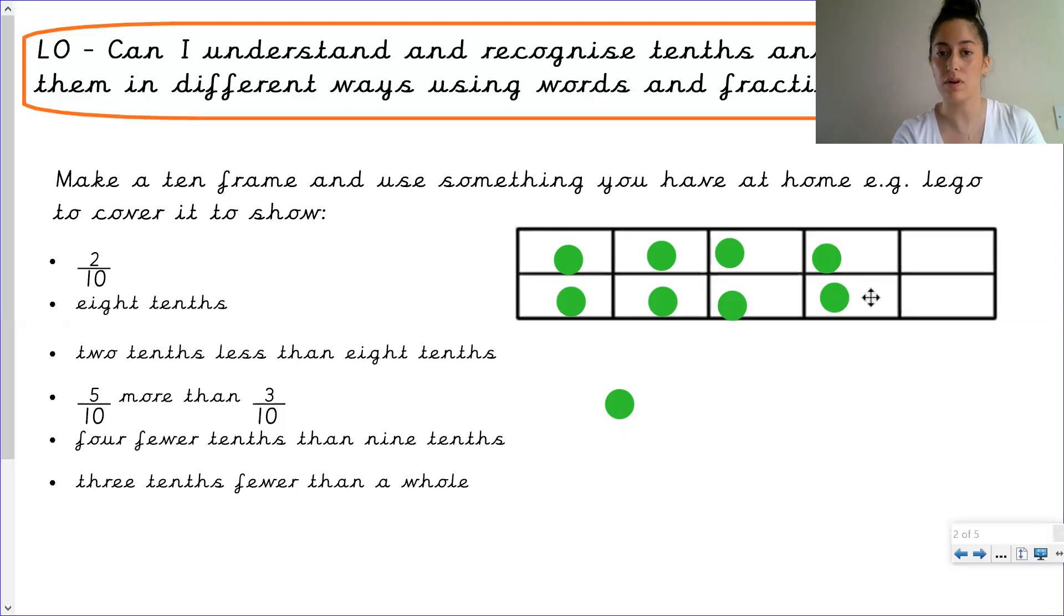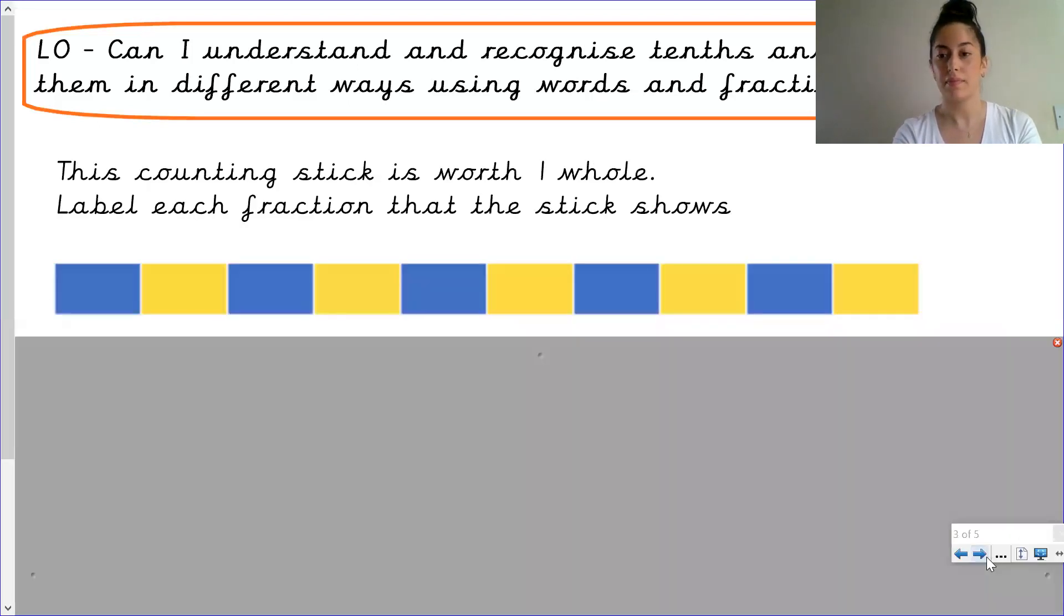Now I've added my five tenths. Now we need to see how much we've got. Two, four, six, eight. We've ended up with eight tenths. Have a go now that I've shown you we've gone through it together. Have a go at doing the next two by yourself. And play the video when you're ready.